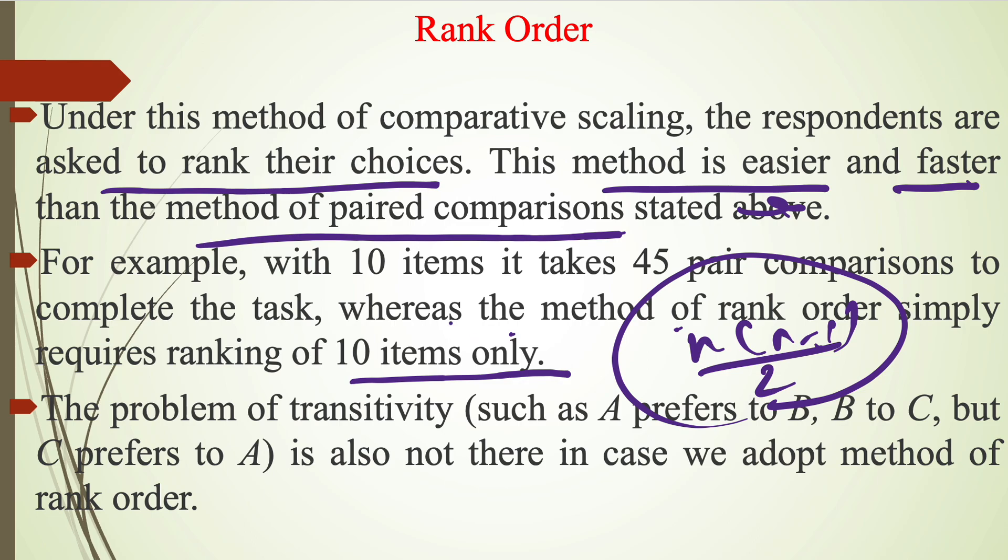The problem of transitivity such as A prefers to B, B to C, but C prefers to A is also not there in case we adopt method of Rank Order because we have to assign only the rank to the items. So it is the easier method and faster method than the paired comparison method.